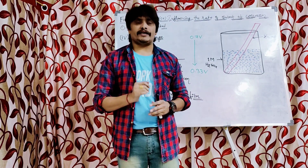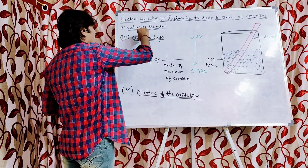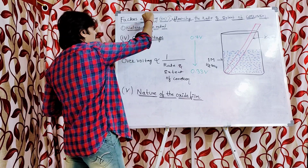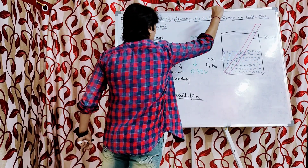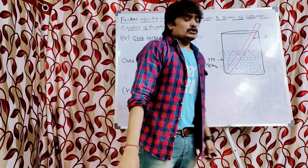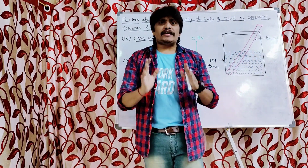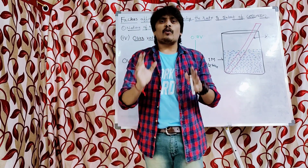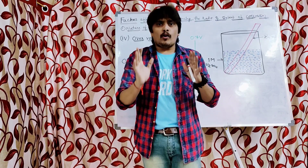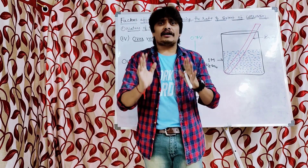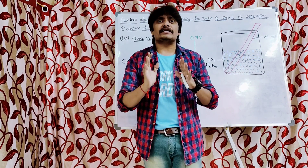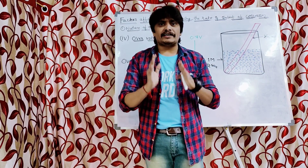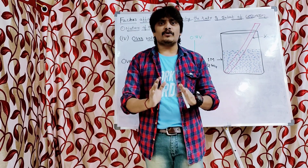The first one is over-voltage. Over-voltage is actually the 4th sub-factor which comes under the category of the main factor, that is nature of the metal, which affects or influences the rate and extent of corrosion. Do not be under the impression that over-voltage means an increase in the voltage. Over-voltage means either an increase or decrease in the voltage of the metal under the new conditions developed.